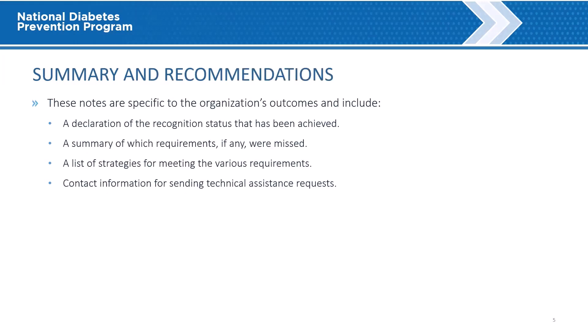Summary and Recommendation. The Summary and Recommendation section provides notes specific to the organization's outcomes. These include a declaration of the recognition status that has been achieved, a summary of which requirements were missed in the full evaluation, a list of strategies for meeting the various requirements, and where to submit requests for technical assistance.